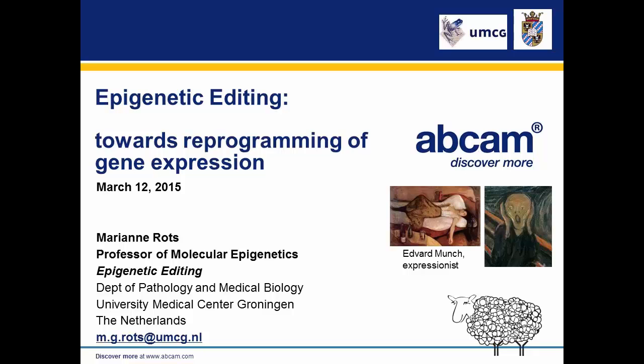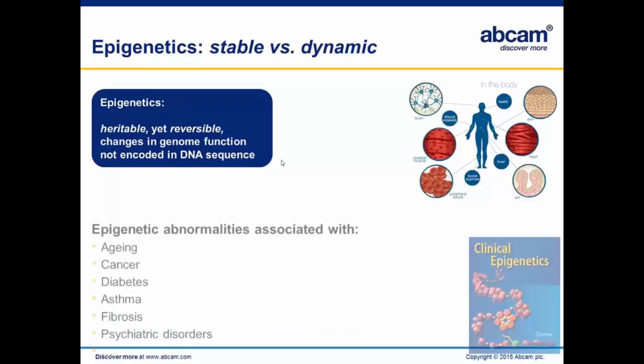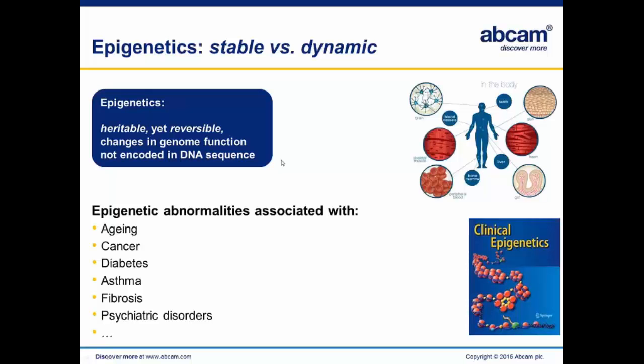We can make use of the dynamic nature of epigenetics. Epigenetics provides the cell a way to remember its cell type identity throughout cell division. And if we can make use of this reversible nature and change genome function in a mitotically stable, heritable way — as a simple definition of epigenetics promises — then this would provide us with a very unique research tool. Beyond that, it would also have clinical relevance.